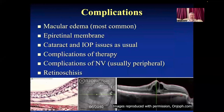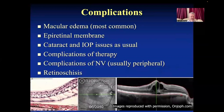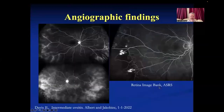Complications of intermediate uveitis most commonly include macular edema, disc edema, and epiretinal membrane. Cataract and intraocular pressure problems can occur from treatment, and since treatment requires injections or systemic therapy, complications of therapy are perhaps more common. Patients can also develop peripheral neovascularization or retinoschesis. Macular edema is the most common complication and is very well characterized by OCT.